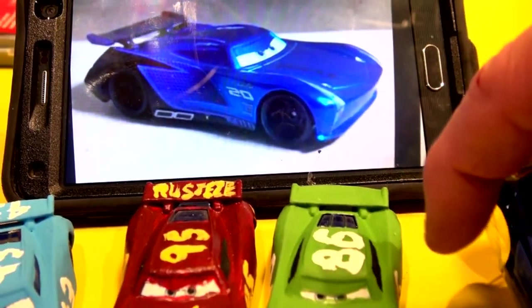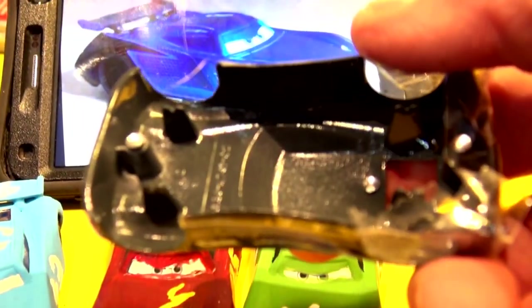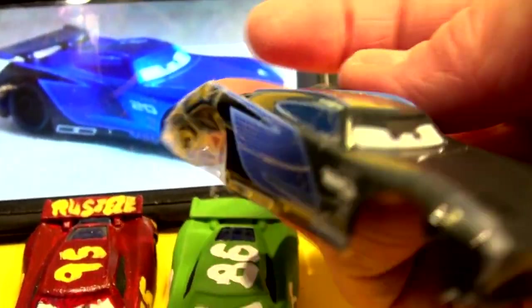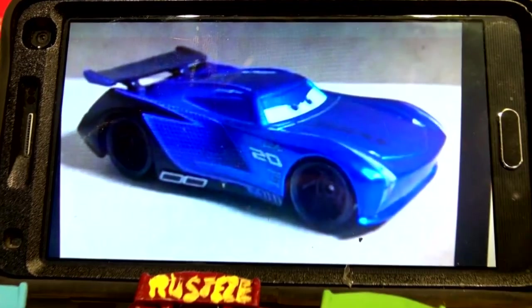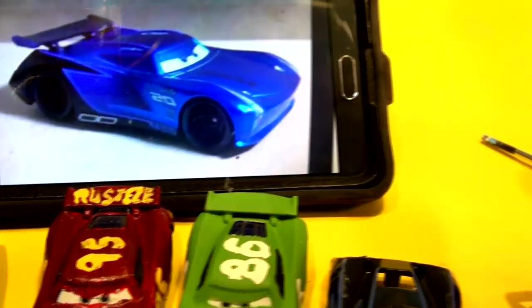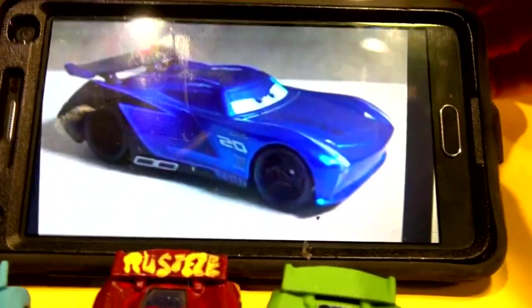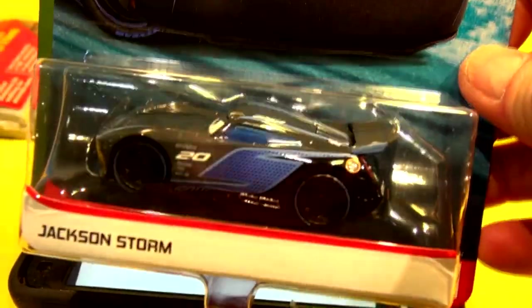So I took our Jackson Storm, drilled out the rivets, removed the entire shell and taped off the eyes and the sides. I'm going to attempt to make Steel Blue Jackson Storm. I went and bought some paint just now and I had to prime it first with a nice primer gray. I got a new primer gray and I also bought a brand new Jackson Storm so I wouldn't be without.